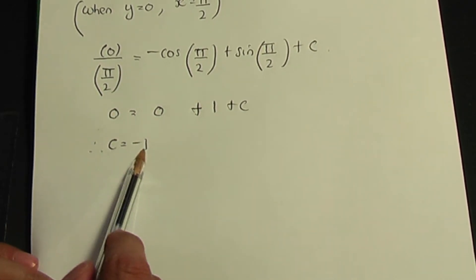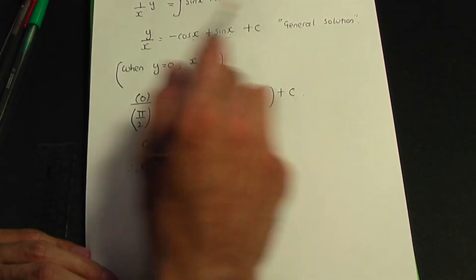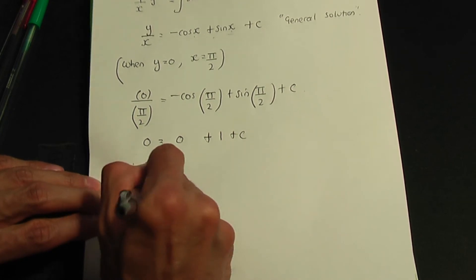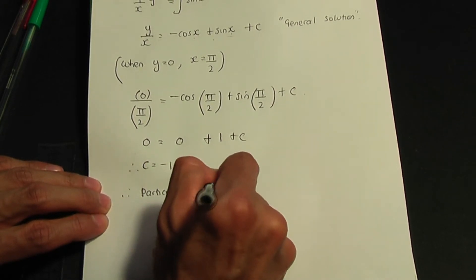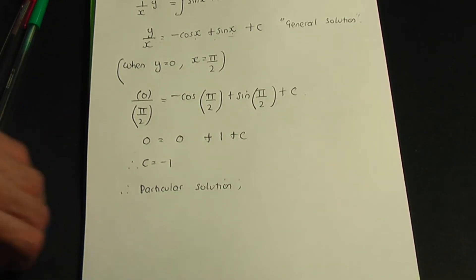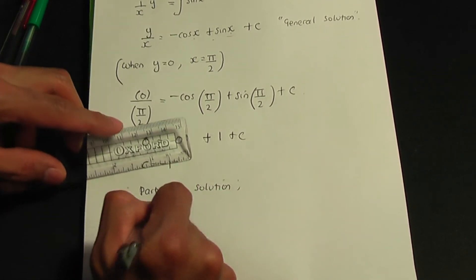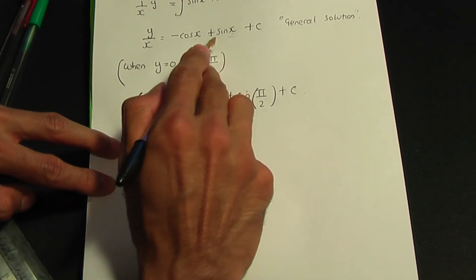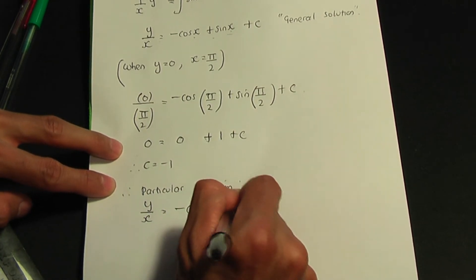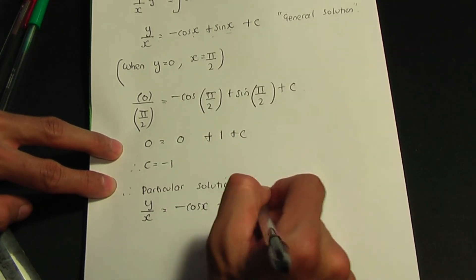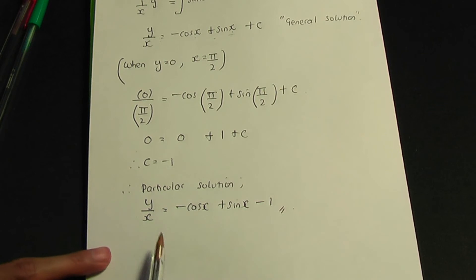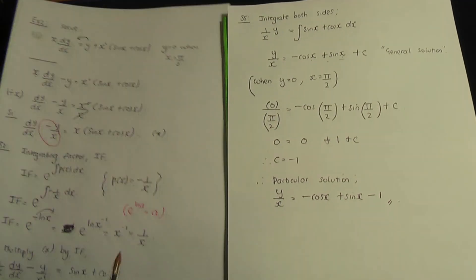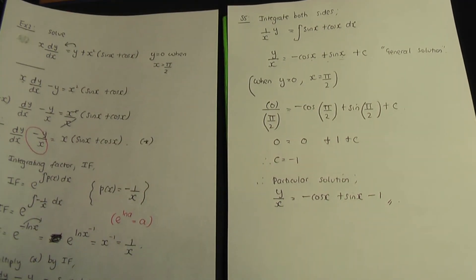Replacing C with −1 in the general solution gives the particular solution: y/x = −cos x + sin x − 1. That is the particular solution to the first-order linear differential equation in example 2. These are the steps involved, and that also ends the video.